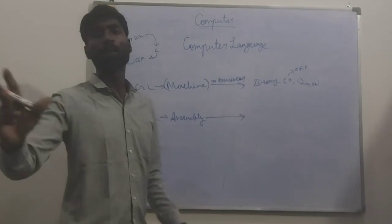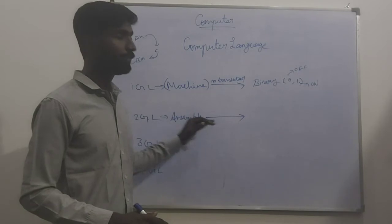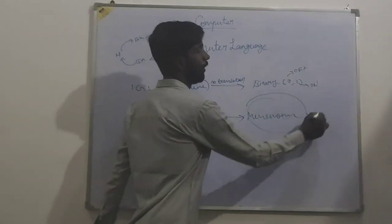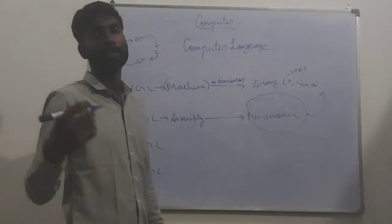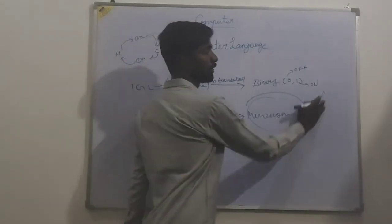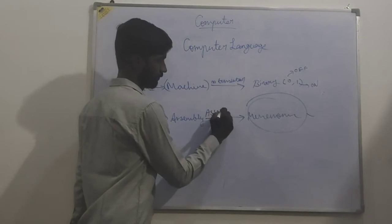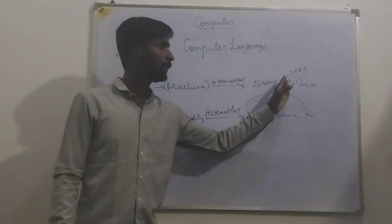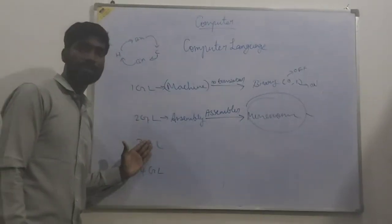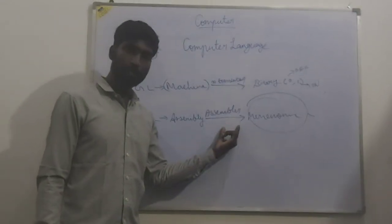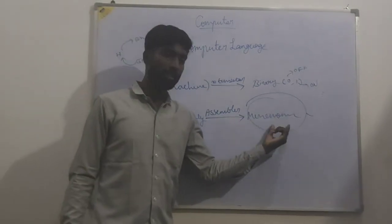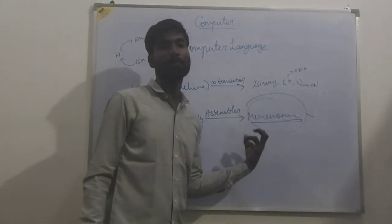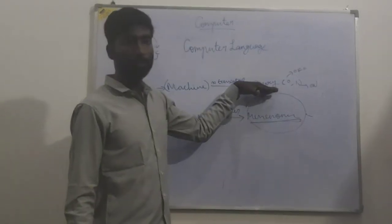Everywhere writing 0, 1, 1, 0, 0, 0, 1, 1, 0 — it is not possible for humans. So in assembly language, we can use mnemonic codes. These mnemonic codes will be converted into binary form with the help of a translator. The translator program is called an assembler. So in assembly language, we use 0 and 1 plus mnemonic codes and symbols in some places. This is the main difference between machine language and assembly language.